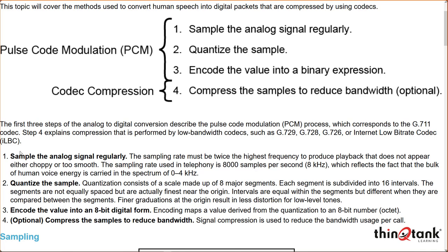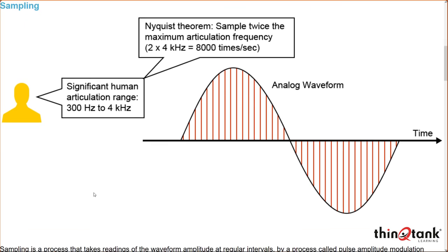We encode the data into an 8-bit digital form: one bit representing the positive or negative side of the scale depending on the companding method — A-law or Mu-law — three bits representing the segments, and four bits representing the steps. Since there are 16 steps, we need 2 to the power of 4. Optionally, we can compress the signal if using a more complex codec.